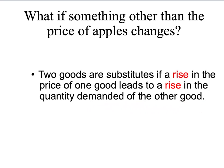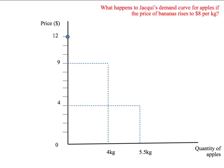Before we show this on a graph, let's think about it. Suppose Jackie likes eating apples and bananas and likes a mix of them. When she goes to the shop, she looks at the price of both. If bananas are expensive, she'll buy less bananas and more apples. If bananas are cheap, she'll buy more bananas and less apples. So a rise in the price of bananas leads to a rise in the quantity of apples demanded — apples and bananas are substitutes for Jackie.